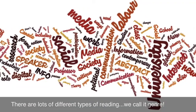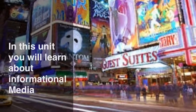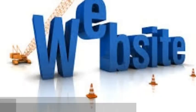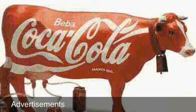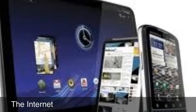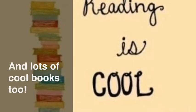There are lots of different types of reading — we call it genre. The genre that you are going to learn about in this unit one is called informational media. It's simple: informational media are sources that give you information, like advertisements, or the internet, and of course you can get lots of great information from all those books in the library.